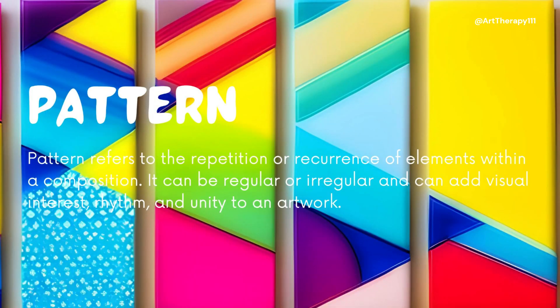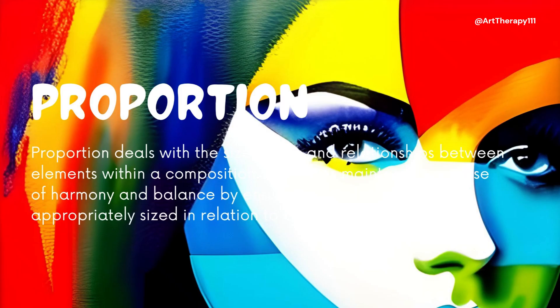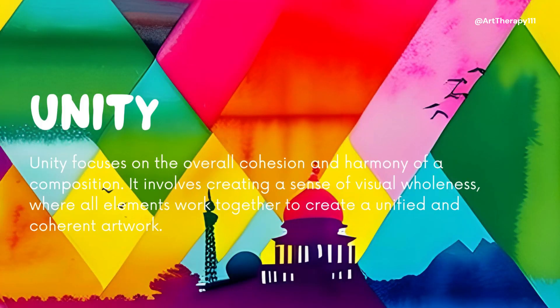Pattern refers to the repetition or recurrence of elements within a composition. It can be regular or irregular and can add visual interest, rhythm, and unity to an artwork. Proportion deals with the size, scale, and relationships between elements within a composition. It involves maintaining a sense of harmony and balance by ensuring that elements are appropriately sized in relation to one another. Unity focuses on the overall cohesion and harmony of a composition, creating a sense of visual wholeness where all elements work together to create a unified and coherent artwork.